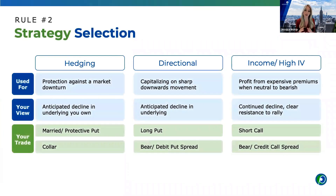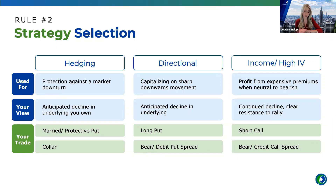Strategy selection has three separate buckets for trading bear markets with options. First is hedging — protecting against a market downturn on securities you already own, essentially buying insurance. You can do this by buying a put, which goes up in value as the underlying security goes down, offsetting those losses. That put is only insuring your securities through the expiration date. The other hedging method is a collar, which we'll go deeper into.